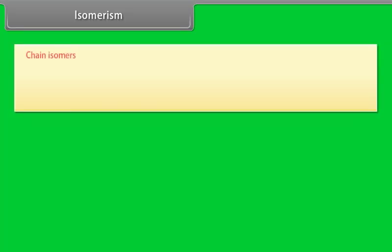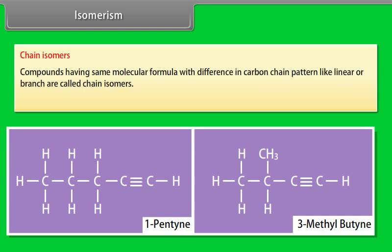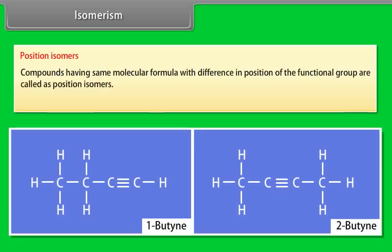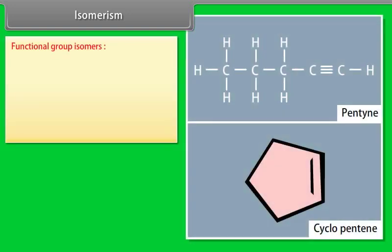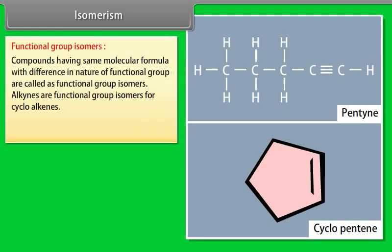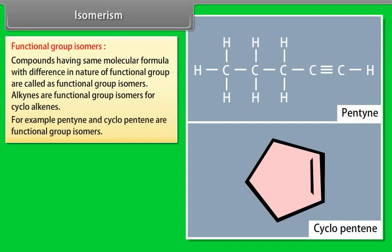Isomerism in alkynes. Chain isomers: compounds having the same molecular formula with differences in carbon chain pattern — like linear or branched — are called chain isomers. 1-pentyne is a chain isomer of 3-methyl-1-butyne. Position isomers: compounds having the same molecular formula with differences in the position of the functional group are called position isomers. 1-butyne and 2-butyne are position isomers. Functional group isomers: compounds having the same molecular formula with differences in the nature of functional group are called functional group isomers. Alkynes are functional group isomers of cycloalkenes — for example, pentyne and cyclopentene are functional group isomers.